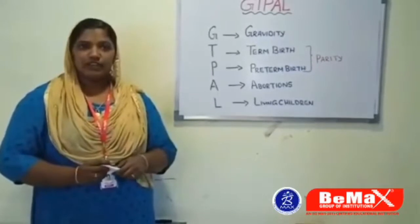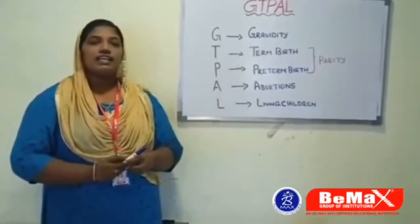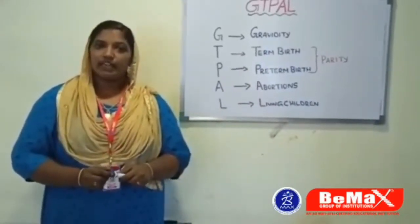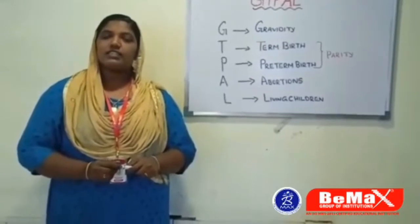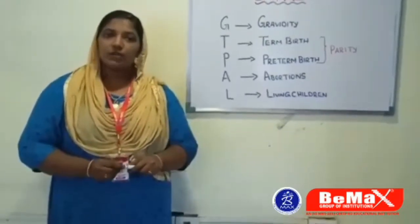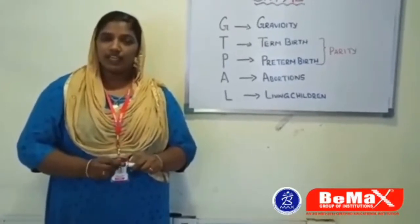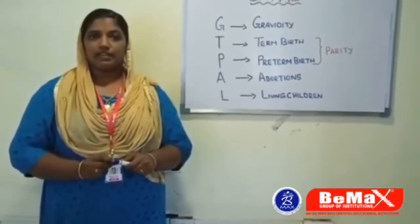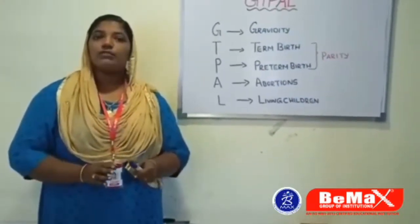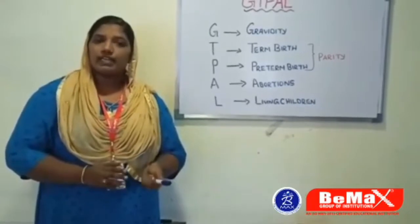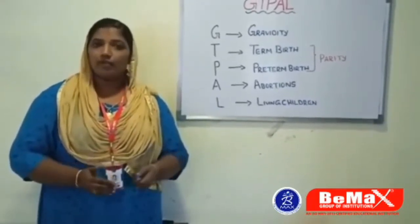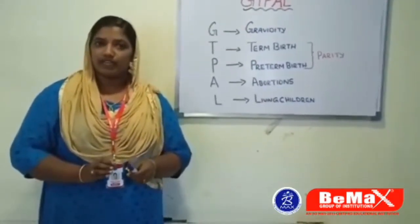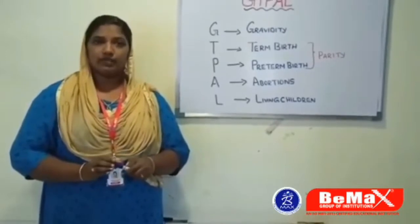Let me explain each letter. The first one is G. G stands for GRAVIDITY. As you all know, GRAVIDA means a pregnant woman. So GRAVIDITY means the total number of pregnancies, including the present one — or how many times a woman has been pregnant. We are not considering the outcome of that pregnancy; only the total number of pregnancies including the present one.